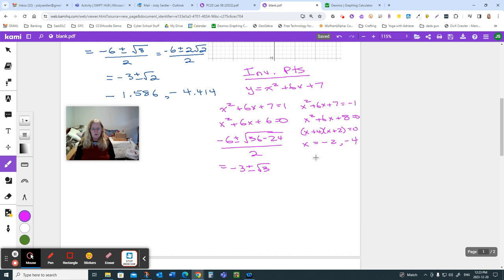Now notice, we have four x values here. There are four invariant points on this graph. Four different places where y ends up 1 or negative 1. This mess down here, negative 3 plus root 3 and negative 3 minus root 3.